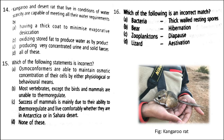Next: which of the following statements is incorrect? The incorrect statement is option A: osmoconformers are able to maintain osmotic concentration of their cells by physiological or behavioral means. Actually, osmoconformers are organisms that change the osmotic concentration of their body with changing ambient conditions. Their body fluids are in osmotic balance with the environment. For many marine invertebrates, the osmolarity and ionic concentrations of their body fluids are similar to those of the seawater in which they live.